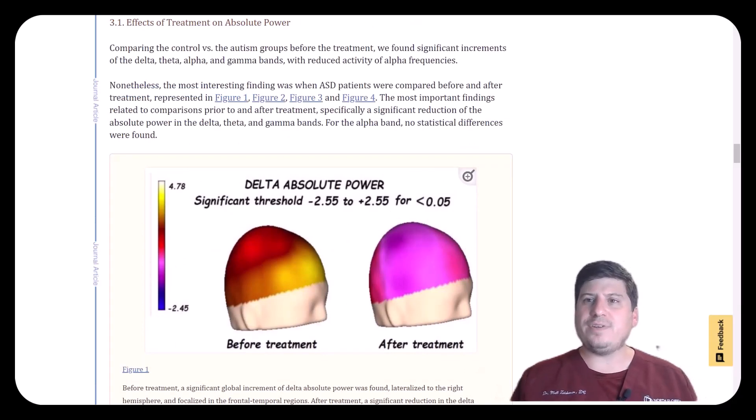Now delta waves are brain waves that we typically see in deep sleep, and they're good to see in deep sleep. But when we are in a state of wakefulness, we shouldn't see high delta wave activity. Before treatment in the autism group, we saw high delta wave activity in the right hemisphere, especially in the frontal temporal regions, indicating underactive right hemisphere activity in autism.